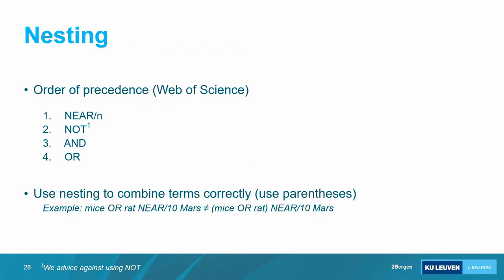Nesting is maybe one of the most important things to remember. Good databases, like mathematics, have an order of precedence for operators. In Web of Science, it processes NEAR first, then NOT, then AND, then OR. So 'mice OR rats NEAR/10 Mars' does not give the same results as '(mice OR rats) NEAR/10 Mars' — without parentheses, it finds 'rat NEAR/10 Mars' OR 'mice,' which is not what you want. Use brackets — parentheses are your best friends in building search strategies. Specify which words go together and in what order.